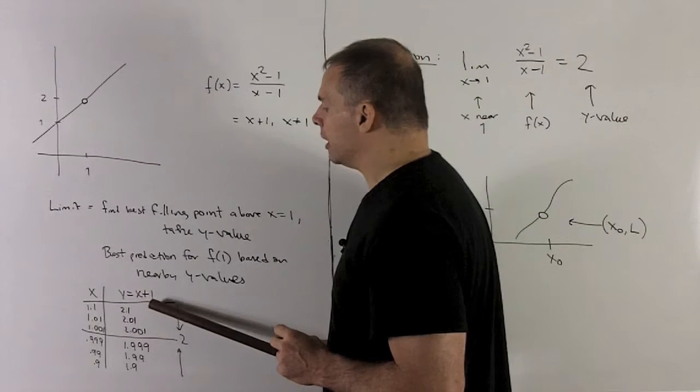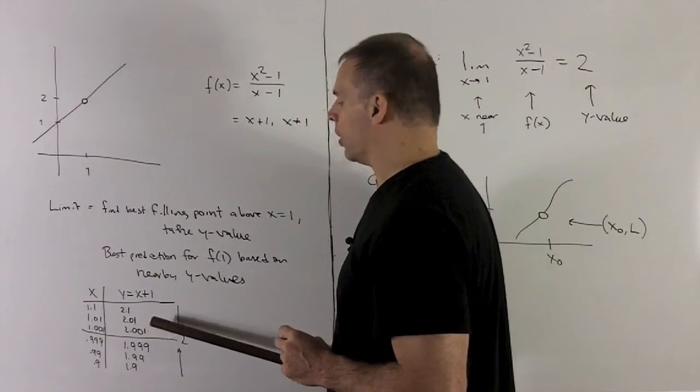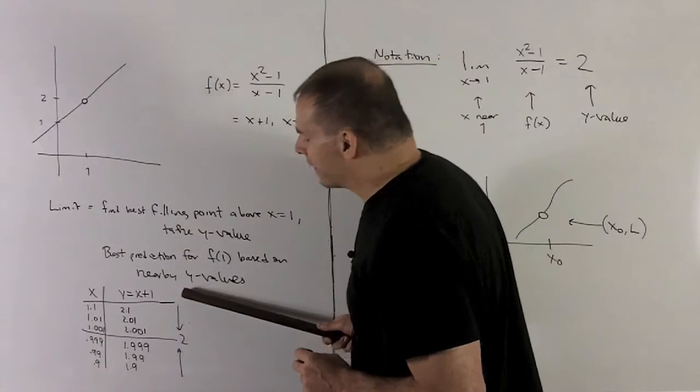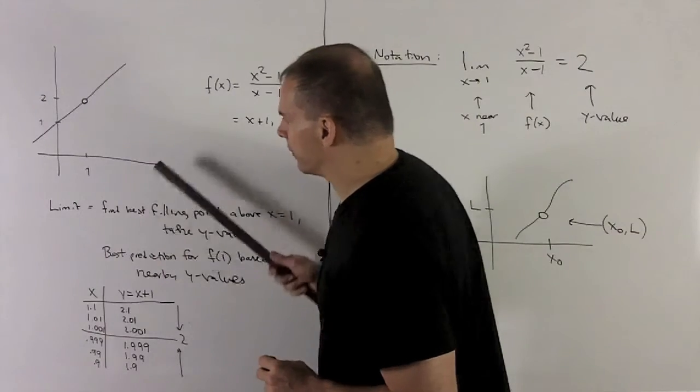Okay, the y's, we're going to get 2.1. Get a little bit closer, 2.01. Get a little bit closer, 2.001. So these y values are coming into 2 as we get to x going into 1 from the right.